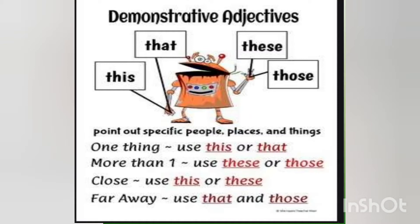These demonstrative adjectives are used to point out specific people, places, and things. If it is singular, we use 'this' or 'that.' If it is more than one, that is for plurals, we use 'these' or 'those.' If the object is nearby, we use 'this' or 'these.' If the object is far away from us, we use 'that' or 'those.'